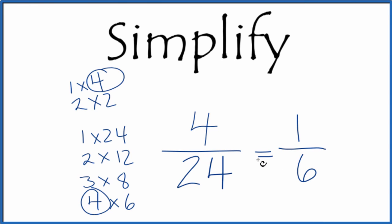These are equivalent fractions. We've simplified 4 over 24 down to 1 over 6. This is in lowest terms, and we can't simplify it or reduce it any further. This is Dr. B. Thank you.